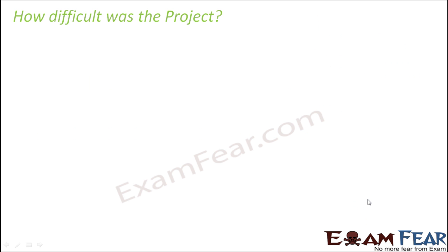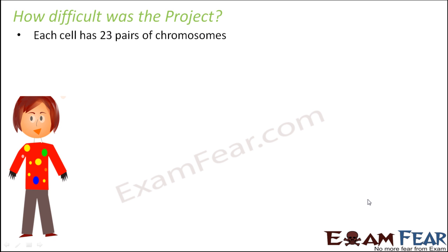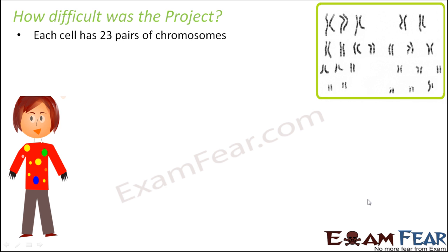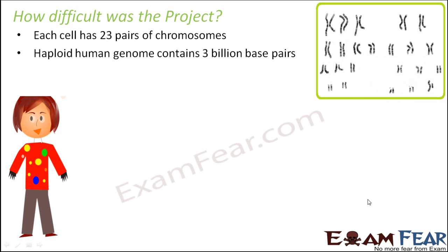So let us see how difficult this project of human genome understanding was. We all know that each cell in the human body has 23 pairs of chromosomes, meaning there are a total of 46 chromosomes in each cell. In each of these chromosomes, there are thousands of genes. The haploid human genome — referring to the haploid set of human chromosomes — contains 3 billion base pairs. Each DNA strand has so many base pairs, giving a total of 3 billion base pairs in each human cell. That is why it was termed a mega project.